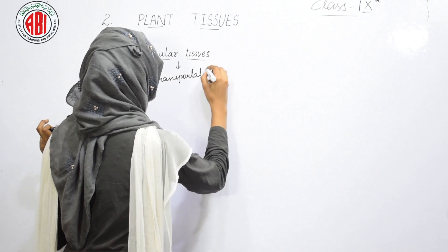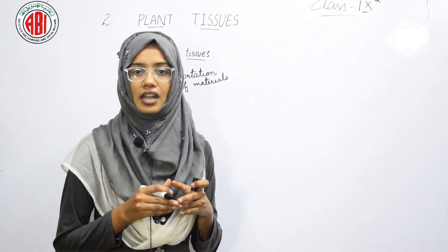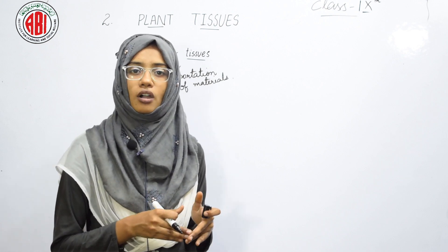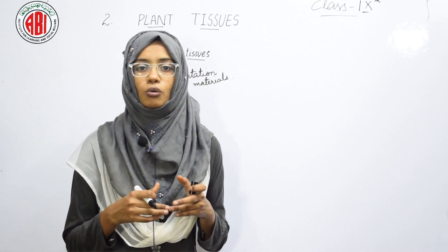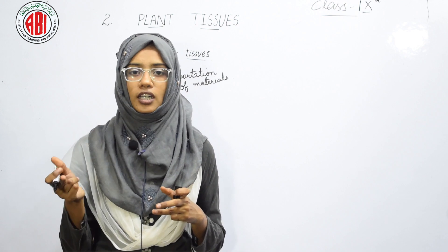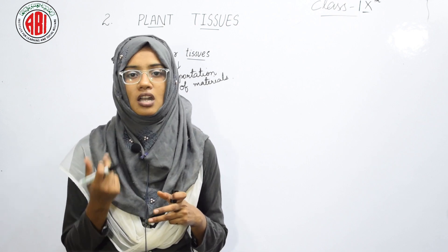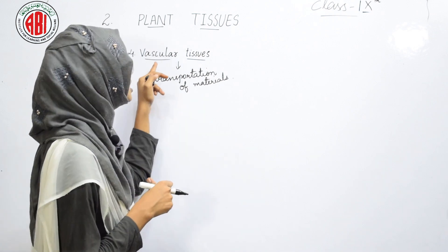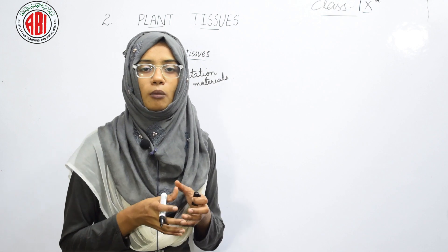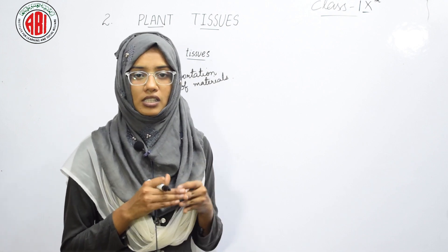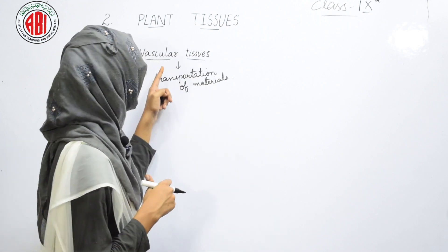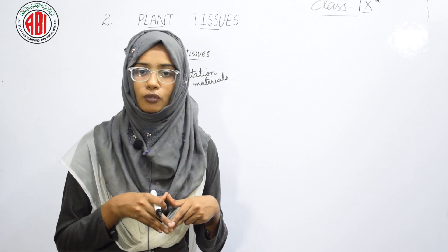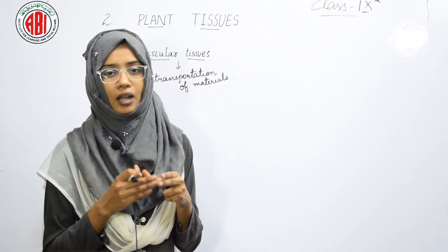The transportation of water, minerals, and food materials throughout the plant body is achieved by vascular tissues. For example, leaves need water to perform photosynthesis. The roots absorb water from the soil and transport it to the leaves. This transportation of water from roots to leaves is made possible by vascular tissues — the water reaches the xylem vessels, which transport it up to the leaves.